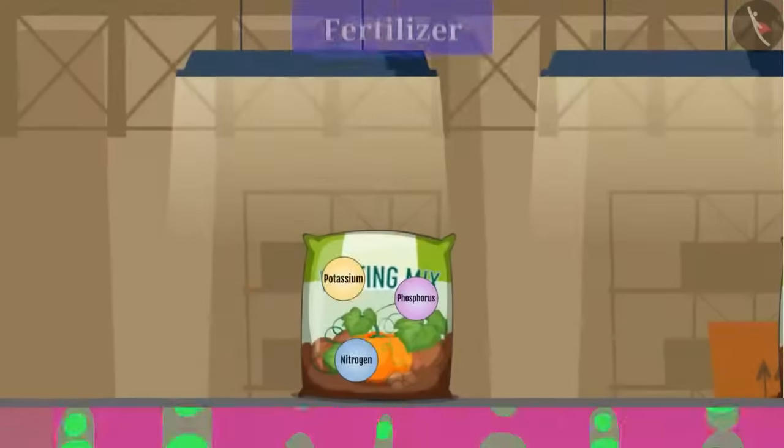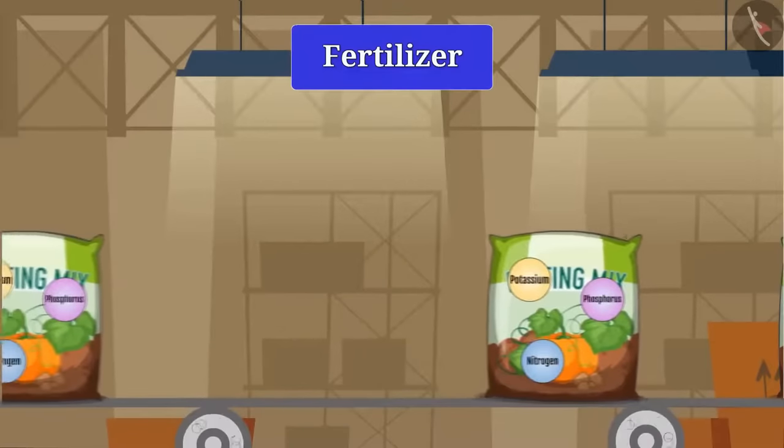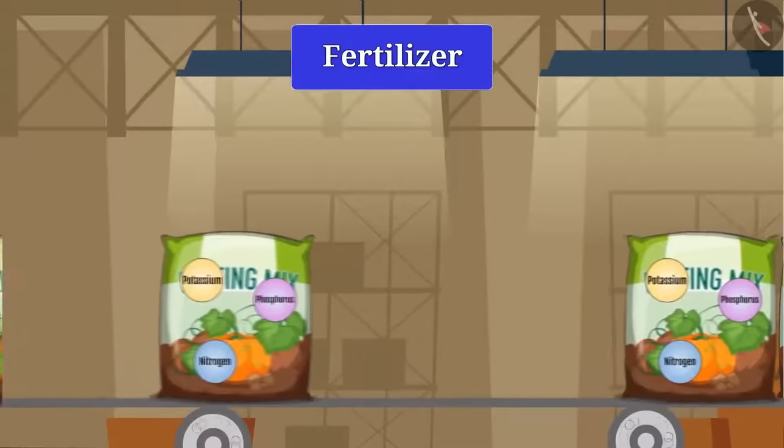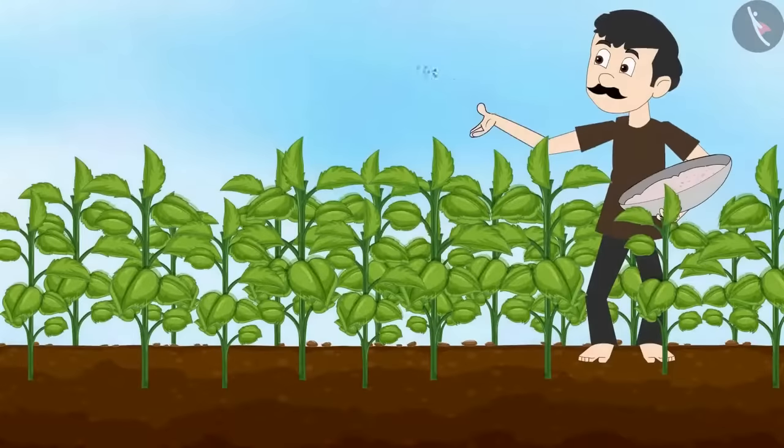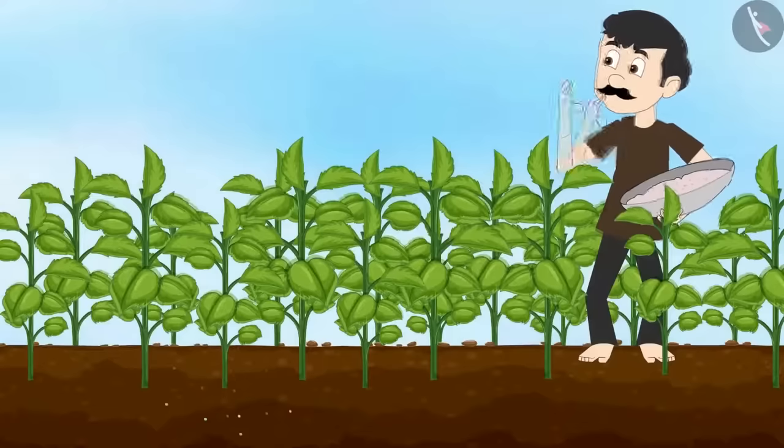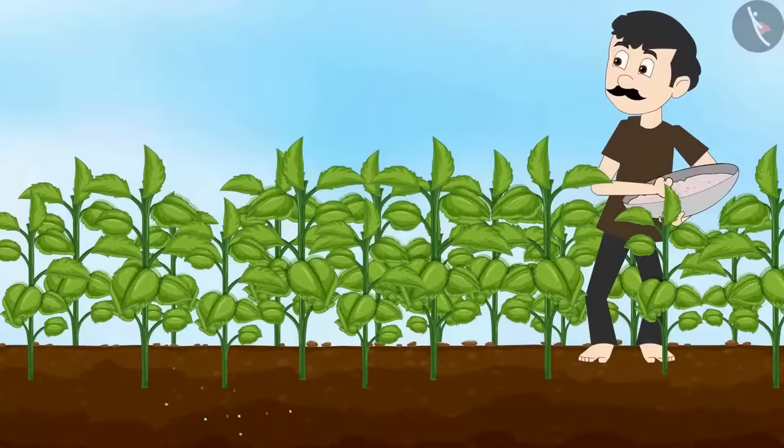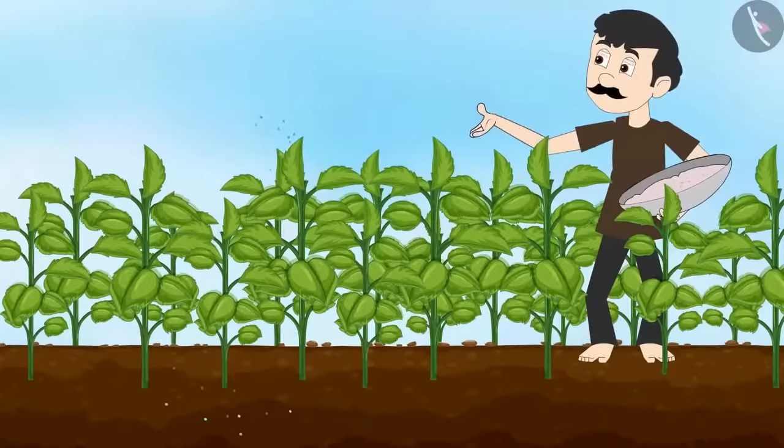And fertilizer is a chemical substance that contains nutrients like nitrogen, potassium, and phosphorus, which when added to the soil increases the fertility of the soil. But friends, use of more fertilizers leads to water pollution.